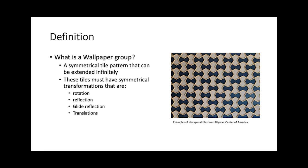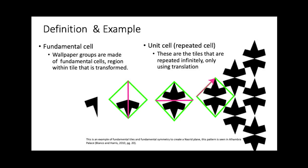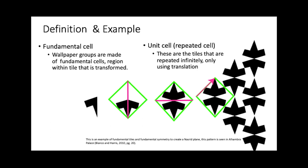The wallpaper group is a symmetrical tile pattern that can be expanded infinitely in the Euclidean 2D plane. It is made up of a building block called a fundamental cell. This fundamental cell is then either reflected, rotated, translated, or glide reflected across an axis or an origin.